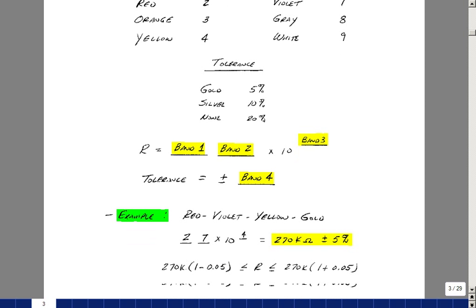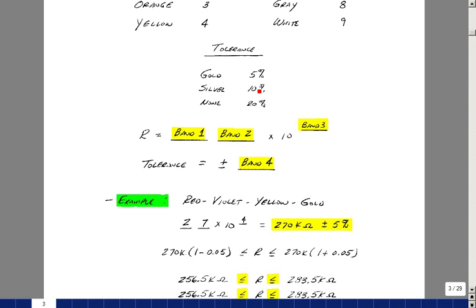Let's do an example. It might be easier to explain this. Suppose that we have a red, violet, yellow, gold resistor. If you look up above here, you can see that red is two, violet is seven, and yellow is equal to four. That's going to give you 27 times 10 to the fourth ohms, or 270 kohms in engineering notation. The gold band in the fourth place is indicative of a five percent tolerance.